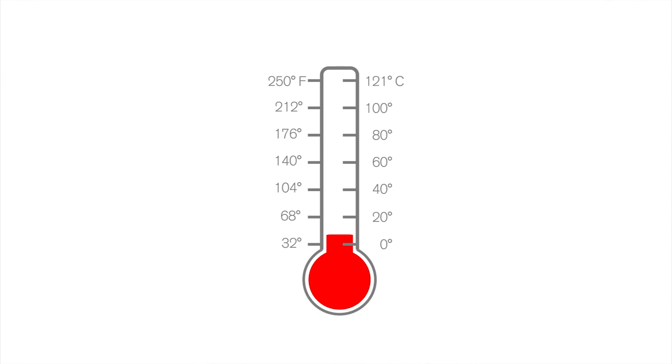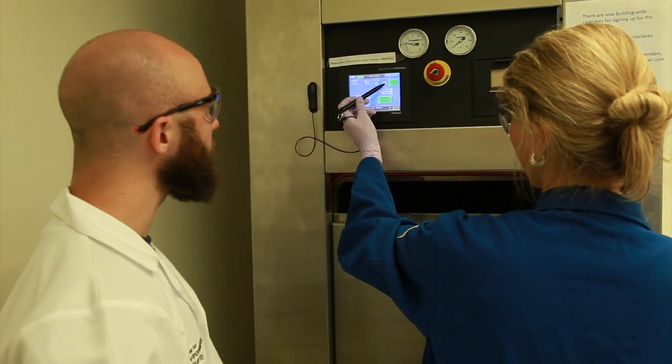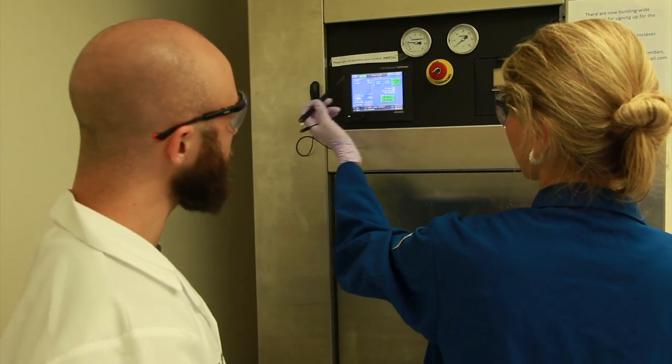A completed cycle usually takes between one to one and a half hours depending on the type of cycle. Note, it is recommended to check on the autoclave run about 20 minutes in to make sure the autoclave is working properly and reached 121 Celsius per your chosen cycle parameters. Do not attempt to open the door while the autoclave is operating. If problems with your autoclave are perceived, abort the cycle and report it to your PI immediately. Communication is key.